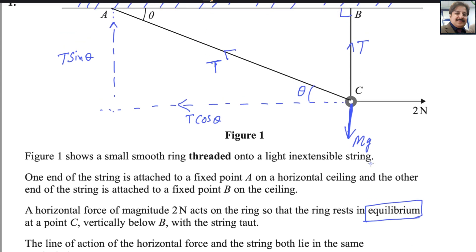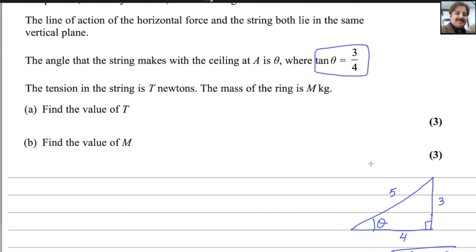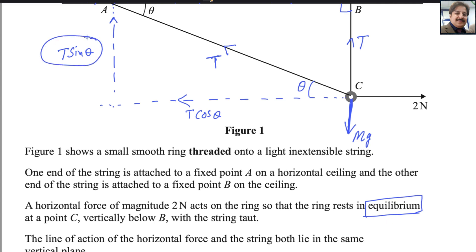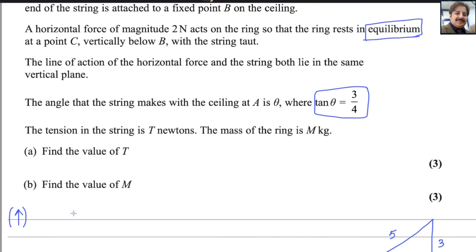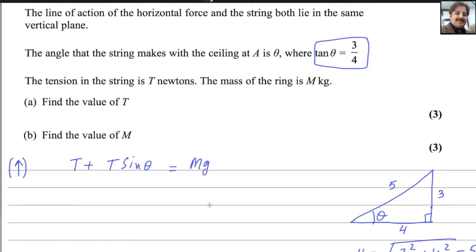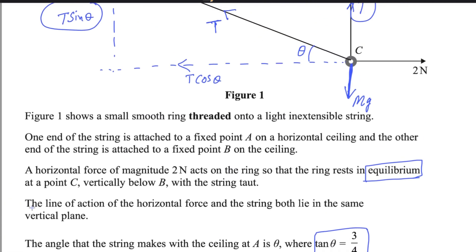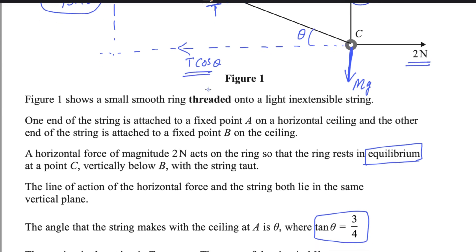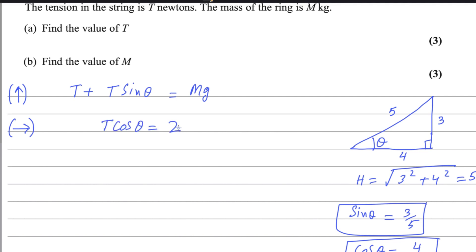This diagram will help you out how to find the value of tension and mass. First of all, we can apply the rule for equilibrium. System is in equilibrium, so upward forces equals downward forces. There are two upward forces: T sine theta and T. So T plus T sine theta equals mg. This is one equation. For horizontal forces, rightward forces equals leftward forces. Rightward force is 2 Newton and leftward force is T cosine theta, so T cosine theta equals 2.